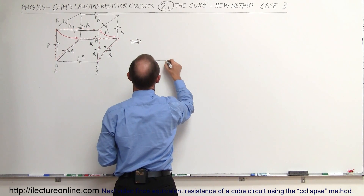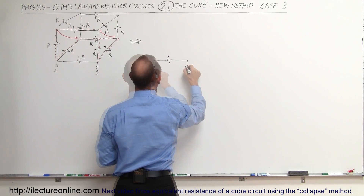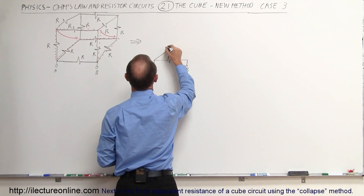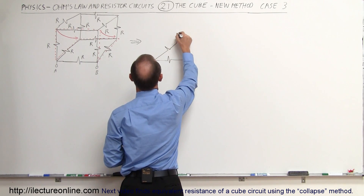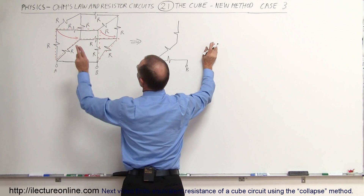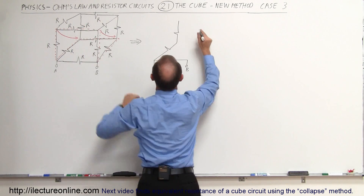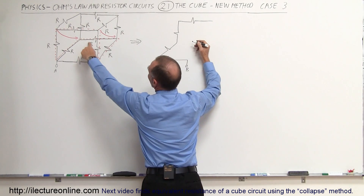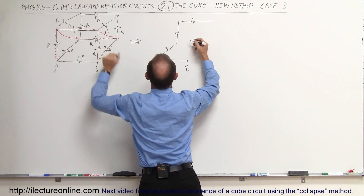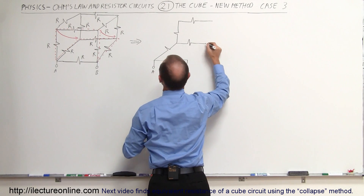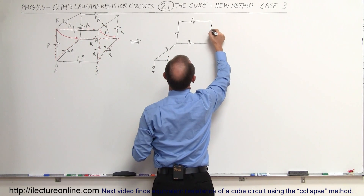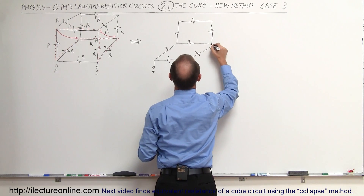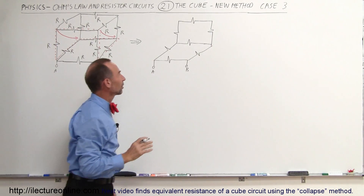We still have the resistor between A and B. Since we collapsed the circuit, we end up with this structure. Notice that this resistor will still be there unchanged. The resistor in the back will be the sum of two resistors collapsed onto each other, and these two will be collapsed as well. So now we have a resistor circuit that looks like that.